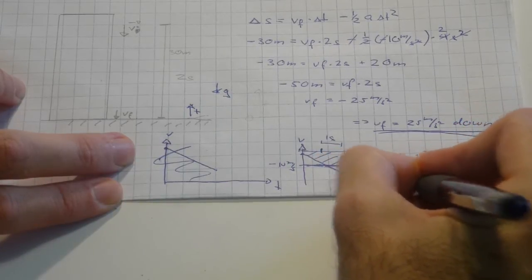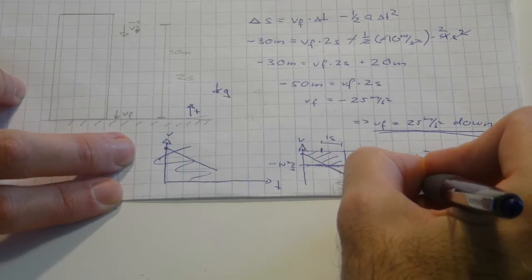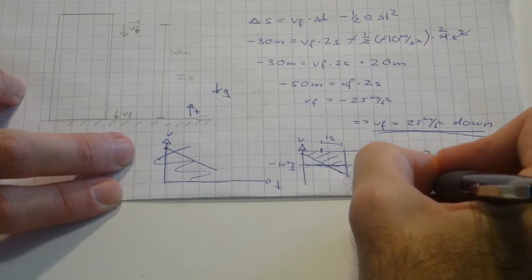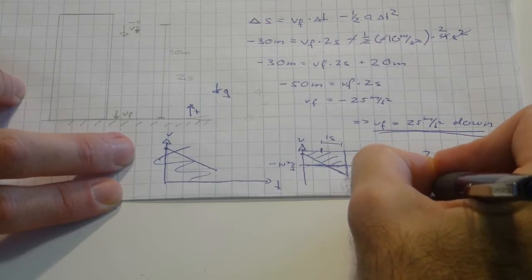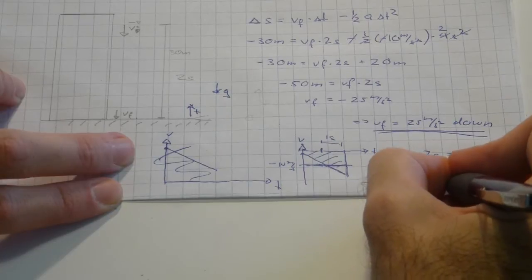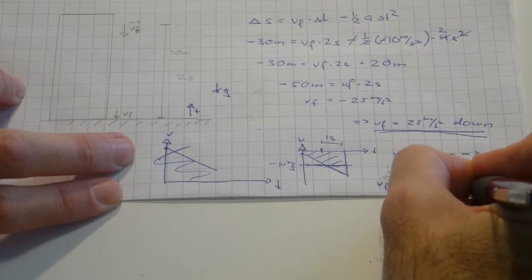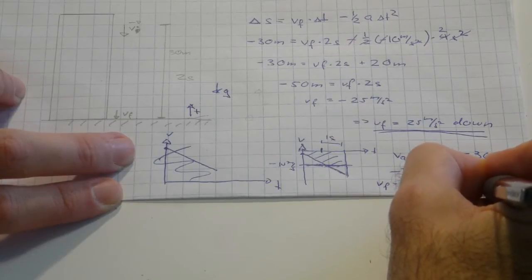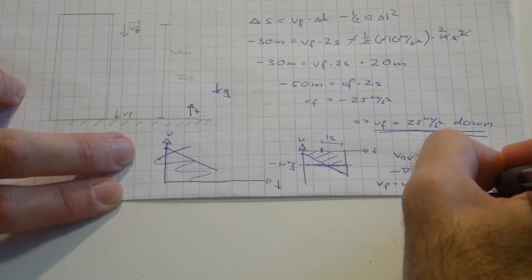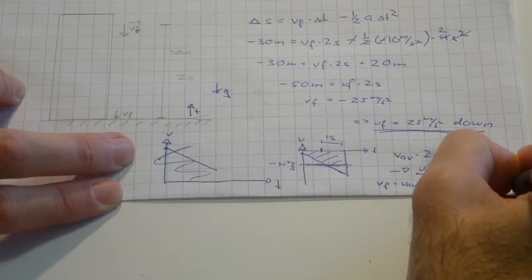V-final equals v-average plus my acceleration times the change in time, which is minus 15 meters per second minus 10 meters per second, giving minus 25 meters per second.